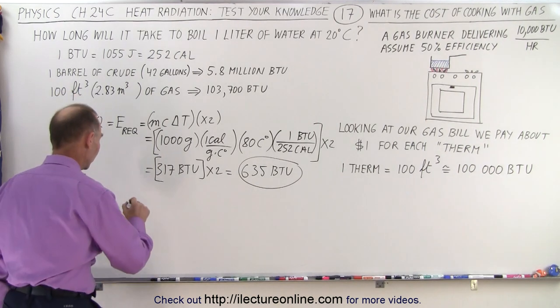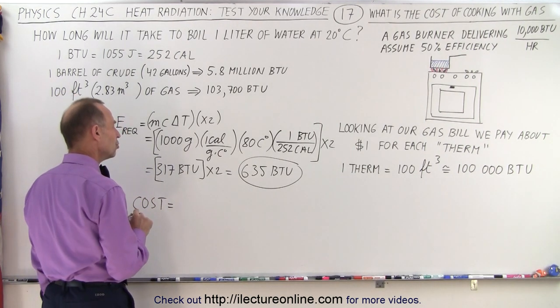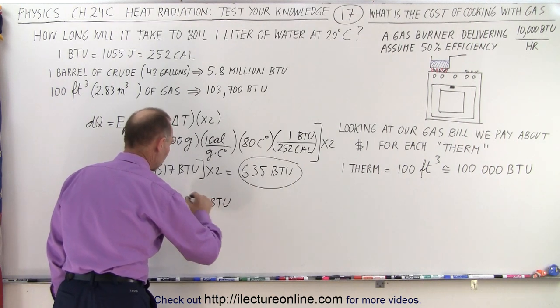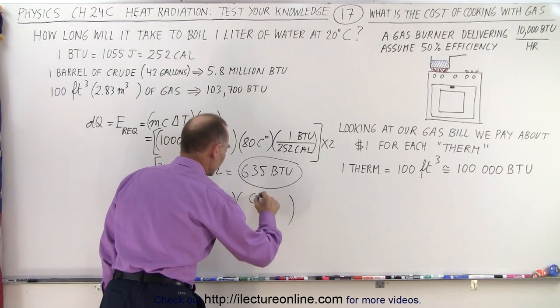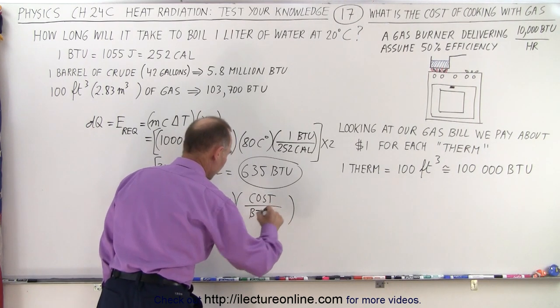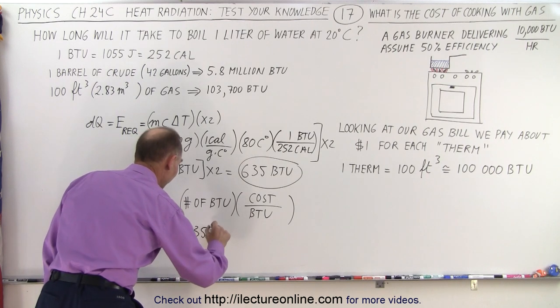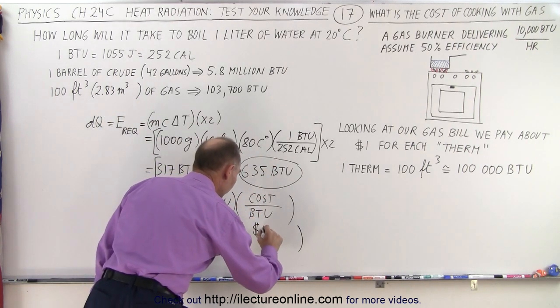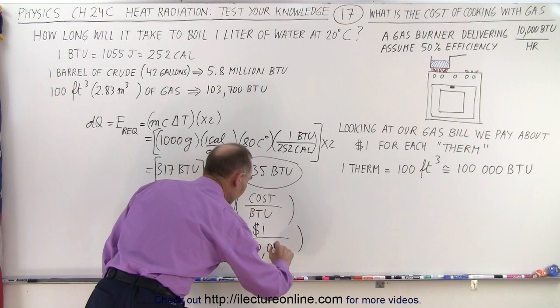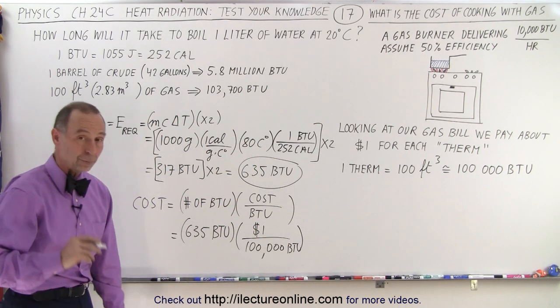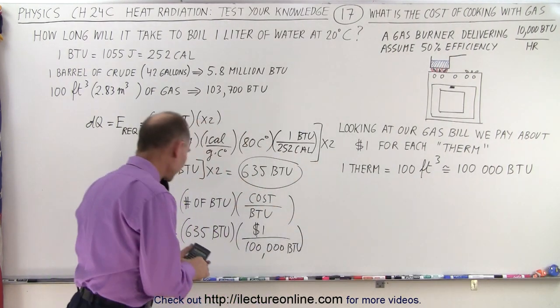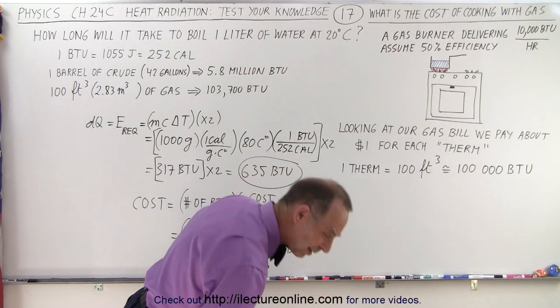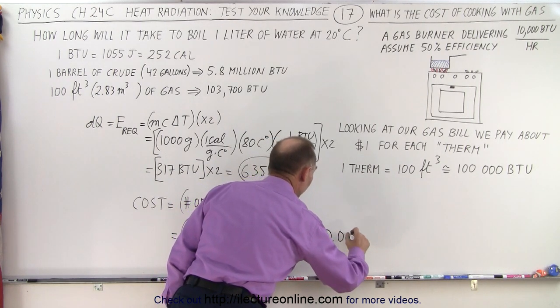How much will that cost? So that means that the cost is equal to the number of BTUs needed multiplied times the cost per BTU. So we need 635 BTUs and we need to multiply that times the cost per BTU, which is $1 per 100,000 BTUs. Now notice BTUs will cancel out. We're left with dollars. So divide that by 100,000 equals, and it looks like that would be equal to $0.006.